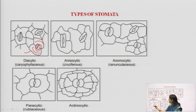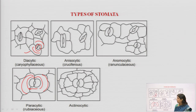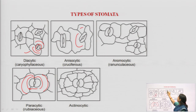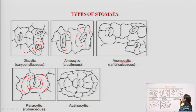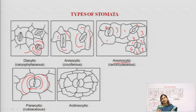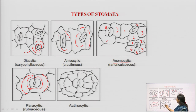Paracytic stomata have guard cells and subsidiary cells parallel to each other. Anisocytic stomata have one large, one small, and one medium-sized subsidiary cell — always three subsidiary cells of different sizes. Anomocytic stomata can have multiple numbers of subsidiary cells, as seen in pictures where there are three, four, or five subsidiary cells beside the guard cells. The fifth type, actinocytic stomata, has a rose-like arrangement.